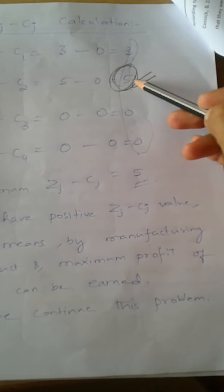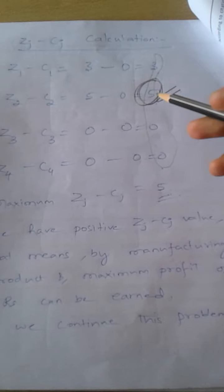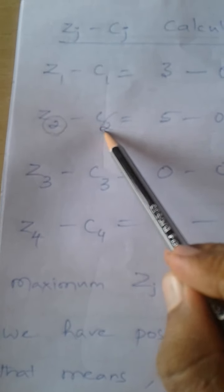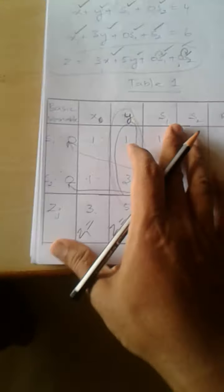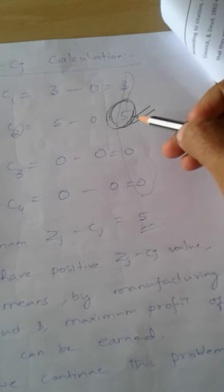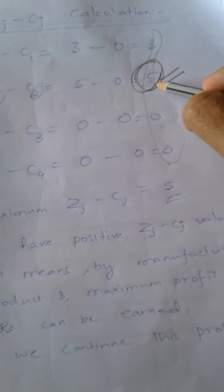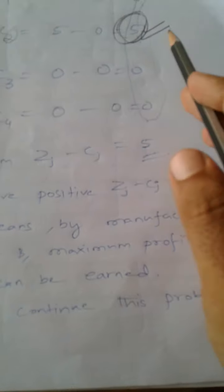We are considering 5 because the firm can get more profits by manufacturing Product B. Z2 minus C2 is relevant to Product B, specifically the second column and the Y column. By manufacturing more number of Product B, the firm can make more profit compared to other products. 5 rupees is more profit compared to 3 rupees and 0 and 0, so we consider the maximum Zj minus Cj.